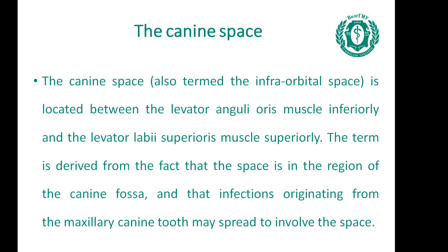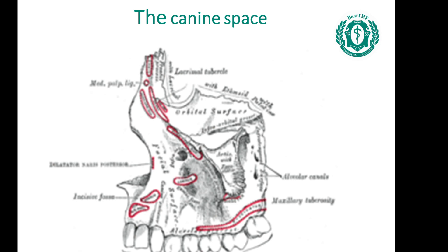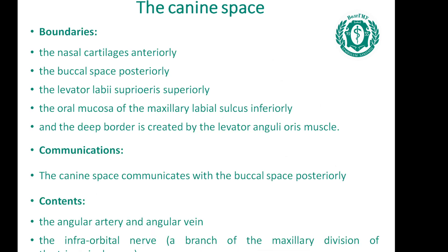The canine space, also termed the infraorbital space, is located between the levator anguli oris muscle inferiorly and the levator labii superioris muscle superiorly. The term is derived from the fact that the space is in the region of the canine fossa and that infections originating from the maxillary canine tooth may spread to involve the space. Its boundaries are: the nasal cartilage anteriorly, the buccal space posteriorly, the levator labii superioris superiorly, the oral mucosa of the maxillary labial sulcus inferiorly, and the levator anguli oris muscle as the deep border. The canine space communicates with the buccal space posteriorly. Contents include the angular artery and vein, and the infraorbital nerve — a branch of the maxillary division of the trigeminal nerve.